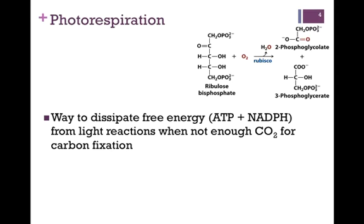Photorespiration is a way to dissipate some of the free energy generated by the light reactions when there simply isn't enough CO2 to fix. Remember, if we overproduce ATP and NADPH and we don't use those components, because they're allosteric regulators, they can shut down multiple pathways. So we need to restore balance, and the plant does so through photorespiration, thereby depleting its ATP and NADPH supplies.